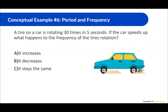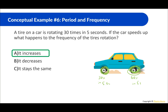A tire on a car is rotating 30 times in five seconds. If the car speeds up, what happens to the frequency of the tire rotation? If it speeds up, it will rotate more — maybe 60 times in five seconds. Since more rotations are happening in a given time, the frequency increases. More rotations are happening in that one second.